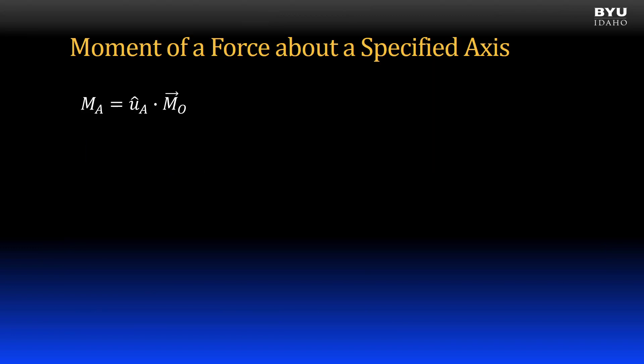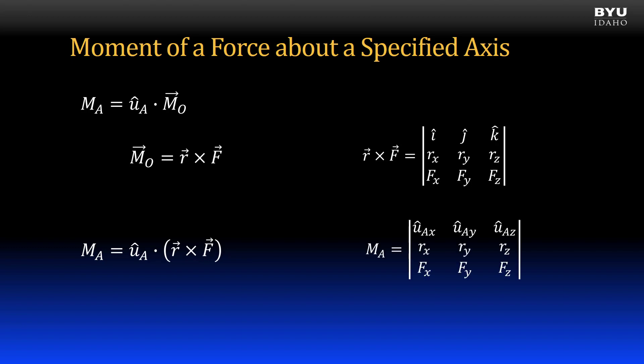Now, we can get the magnitude of our projected vector about a specified axis from the force and position vectors in a single step. Here is our basic dot product equation. The moment vector is the position vector cross the force vector, which we can get as the determinant of this matrix. We can rewrite the first equation by substituting in R cross F. And we can revise our matrix by substituting in the unit vector components for i, j, and k.